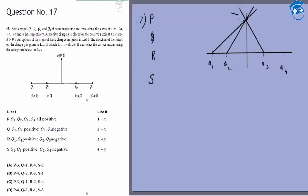In option P, all four charges are positive, so all four will have radially outward electric fields. By symmetry, the sum will be in the positive y direction, so P matches option 3. In Q, charges Q1 and Q2 are positive giving a field in one direction, but Q3 and Q4 are negative giving the field in the opposite direction. By symmetry the sum will be in the positive x direction, which is option 1.